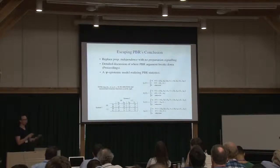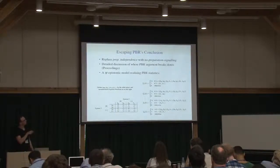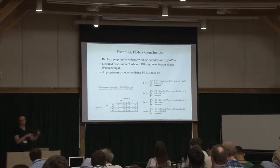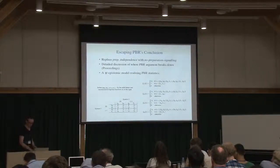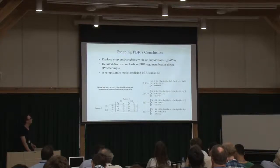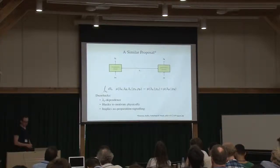There's a detailed discussion where the argument breaks down in the proceedings, but here I hope it would suffice to flash up an explicit epistemic model which realizes PBR statistics. So this is such a model that's not going through.